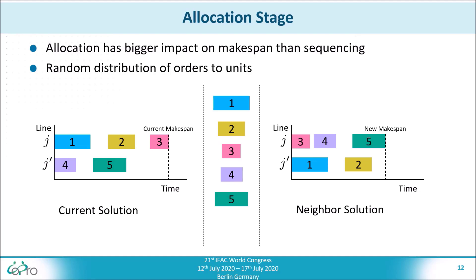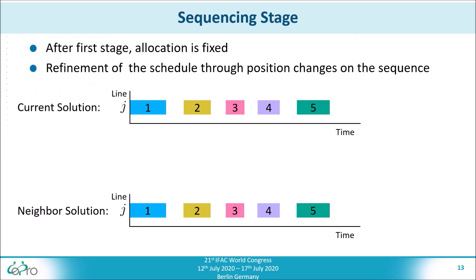After this stage terminates, the allocation of orders to lines is fixed, and the algorithm proceeds to the second stage for the sequencing. After the termination of the first stage and the fixing of the allocation decisions, the schedule is further refined in the sequencing stage. In this stage, each line is optimized independently.